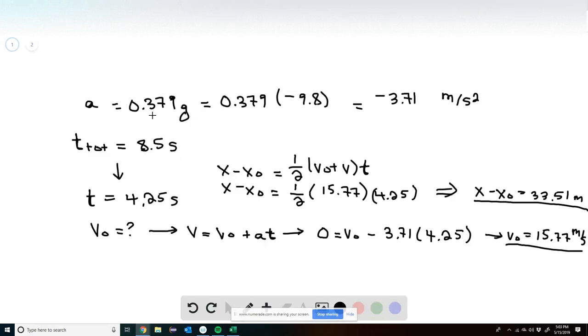So in this problem, we have an acceleration of 0.379g, and when we plug in for what g is, we are able to get an acceleration on Mars of negative 3.71 meters per second squared.